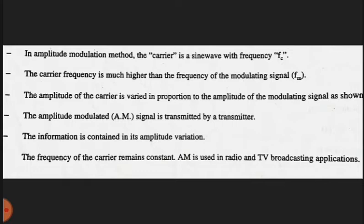The amplitude of the carrier is varied in proportion to the amplitude of the modulating signal. The amplitude modulated signal is transmitted by the transmitter. The information is contained in its amplitude variation.